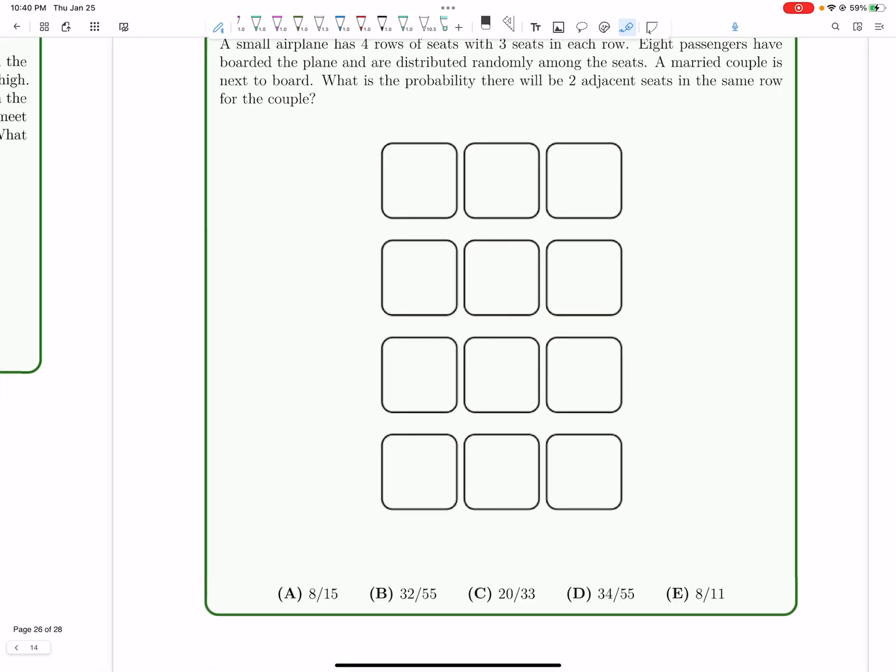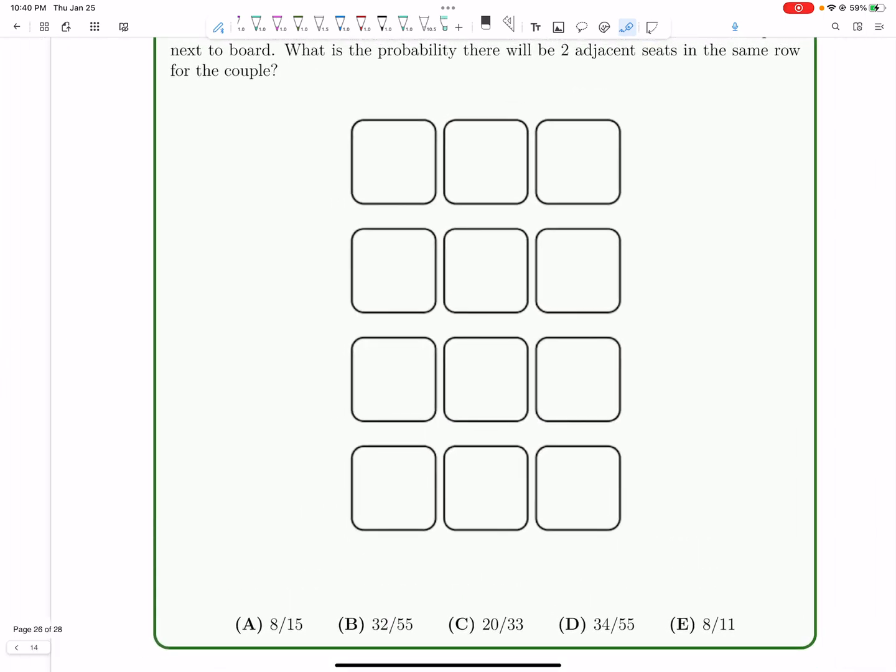This is kind of a problem here. Where can the two seats be? How many ways are there to pick which two adjacent seats they're going to be? One example is the two adjacent seats could be these two. Another example is the two adjacent seats could be these two. And similarly, it could be these two, these two, and so on.